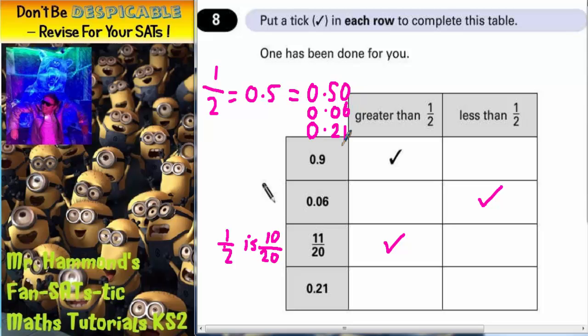You shouldn't really say it like this, but sometimes it helps people to think of it as 0.21 being less than 0.50. You could even think of a pound sign. In money, this would be 50 pence and 6 pence and 21 pence. So 0.21 is going to be less than 0.50. So this one is less than a half.